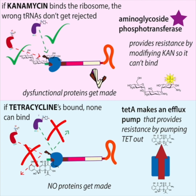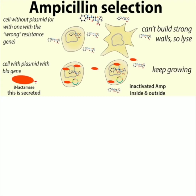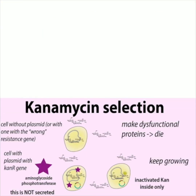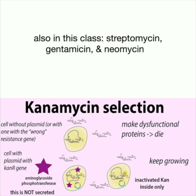It makes the proteins that the bacteria produce dysfunctional — lots of them are useless — but you're not actually interfering with bacterial DNA synthesis in any way, not introducing mutations, just getting them to make useless proteins. With ampicillin, the beta-lactamase gets excreted out of the cells to go on the offensive. With kanamycin, it's not excreted out of the cells, but you're still inactivating the antibiotic by modifying it. Also in this aminoglycoside class are streptomycin, gentamycin, and neomycin.